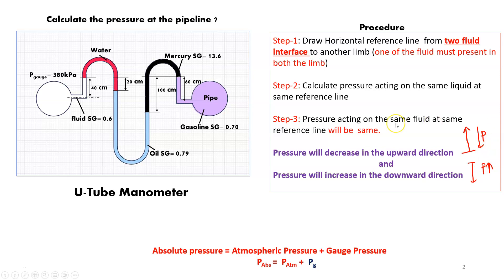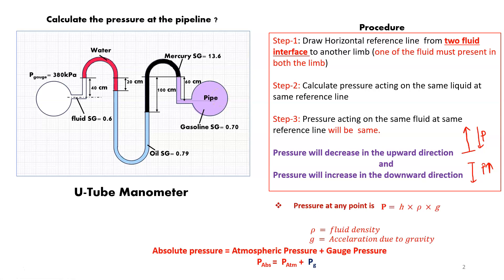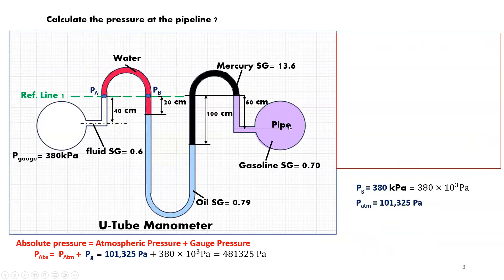Using that procedure, we can calculate the pressure at the pipeline. We also know that absolute pressure equals atmospheric pressure plus gauge pressure. Additionally, pressure at any point P equals h·ρ·g, where h is height of the liquid, ρ is fluid density, and g is acceleration due to gravity.